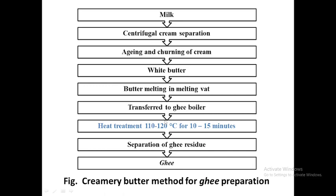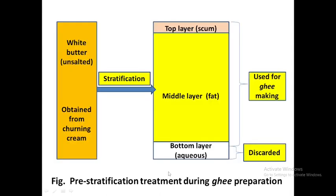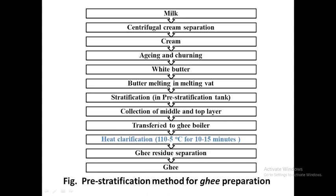The pre-stratification method is a modification of the creamery butter method. After melting the butter, stratification is performed. Upon stratification, three layers form: a top scum layer of proteins and phospholipids, a middle fat layer, and a bottom aqueous layer containing SNF and moisture. The aqueous layer is discarded. The top scum and the middle fat layer are collected and transferred to the ghee boiler for clarification, yielding the final ghee.